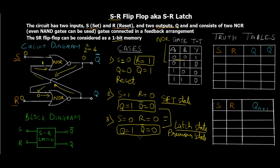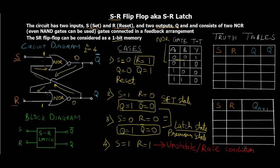For Case 4: S = 1 and R = 1. Since both inputs are 1, both NOR gates produce output 0, meaning Q = 0 and Q-bar = 0. This is contradictory because Q and Q-bar must always be complements of each other. Therefore S = 1, R = 1 produces a contradiction, making it an unstable state also known as a race condition. This state must always be avoided — never give S = 1 and R = 1 as it yields an unfavorable, unpredictable output.